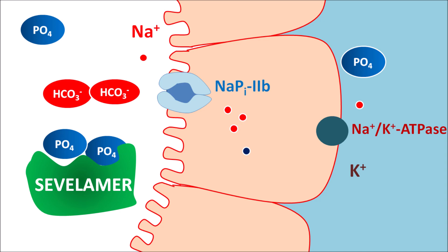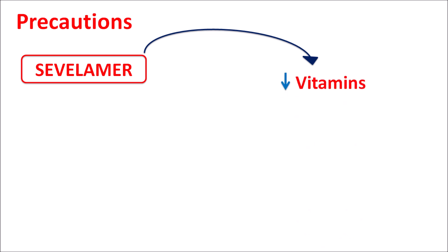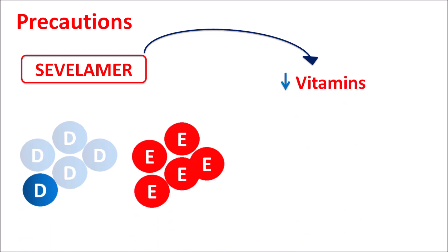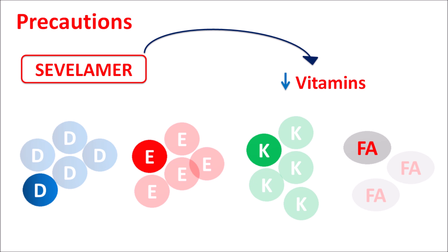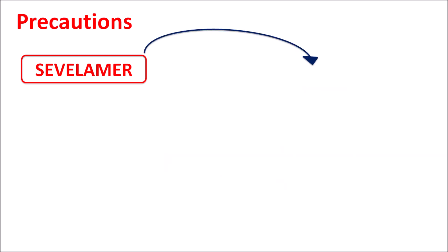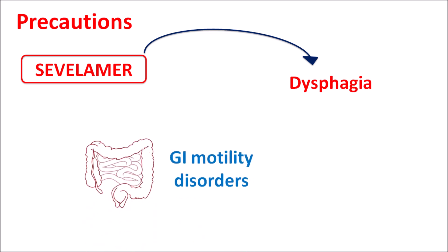By reducing phosphate absorption, sevelamer reduces serum phosphate levels in patients maintained on dialysis with chronic kidney disease. As a precaution, this drug can reduce the absorption of vitamins — particularly vitamins D, E, and K — as well as folic acid. When prescribed for longer periods, these vitamin levels should be monitored. Sevelamer can also produce dysphagia, or difficulty in swallowing, so in patients with gastrointestinal motility disorders or those who have had recent GI surgery, the drug should be used with caution.